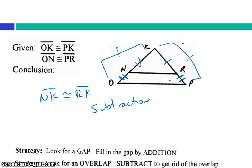With subtraction, we're looking for some sort of overlap. And we subtract those congruent segments to get rid of that overlap in order to make our statements.